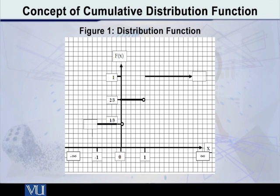Now, as we reach to minus 1, now our probability has occurred and its value is 1 by 3. So therefore, our horizontal line which was initially on the x-axis, now it takes a jump. It takes a jump and it goes up to at level 1 by 3.